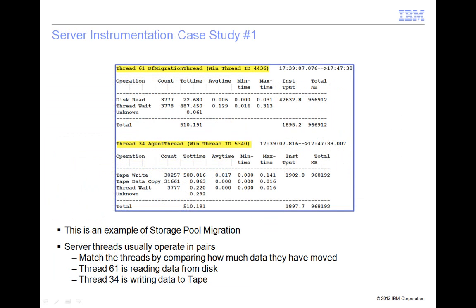Now we will look at two performance tuning case studies. The first is a storage pool migration where the overall throughput is less than expected. The source storage pool in this migration is a disk pool. The target pool is a tape pool. The first step is to find the threads that are performing the data movement.